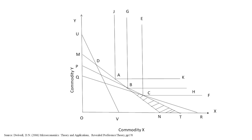Any bundle in the area NBT is inferior to bundle B. This means that the consumer ranks all bundles within the NBT area as less preferred or inferior to bundle B. The triangle NBT, which is a subset of the ignorance zone KAN, is clipped off or reduced.